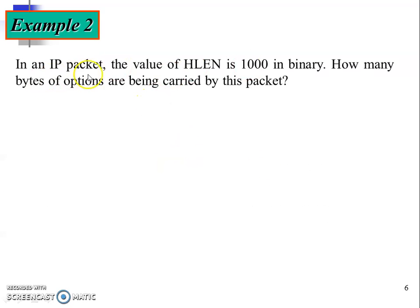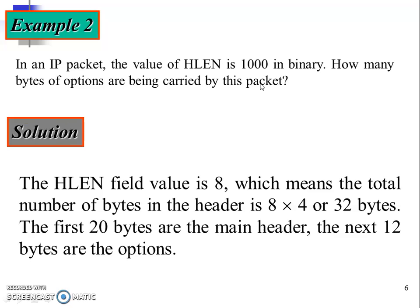Example two: in an IP packet the value of hlen is 1 0 0 0 0 in binary. How many bytes of options are being carried by this packet? The hlen field value is 8 (since 10000 in binary is 8), which means the total number of bytes in the header is 8 × 4 = 32 bytes. We multiply by 4 to convert to bytes. The first 20 bytes are the main header, so what remains are 12 bytes. Therefore, the options field carried by this packet is 12 bytes.